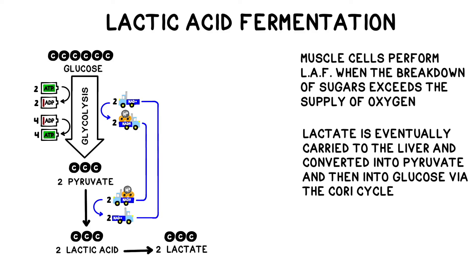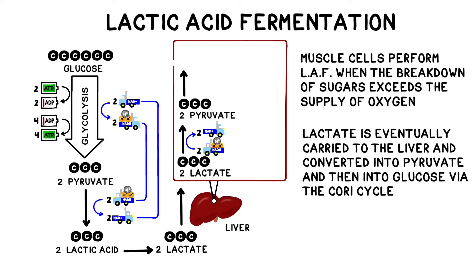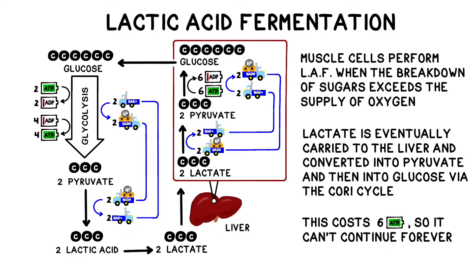Lactate, the ionized form of lactic acid, is eventually carried to the liver and the blood, where it is converted back into pyruvate and then into glucose via a process called the Cori cycle. The newly formed glucose can then be fed back into glycolysis. However, because this conversion back to glucose depletes 6 ATP and lactic acid fermentation only recharges 2 ATP, the process cannot be sustained indefinitely. Eventually, you can't sustain the level of effort anymore and you have to either slow down or stop.